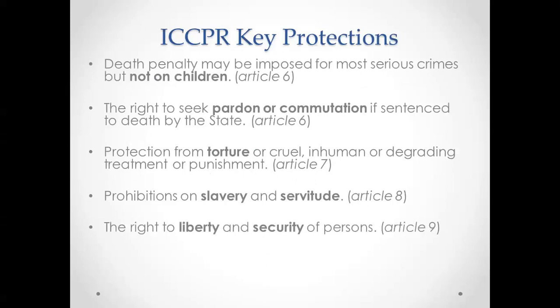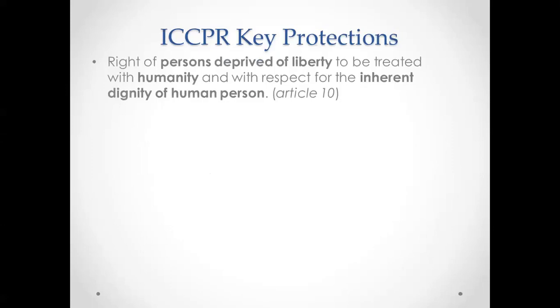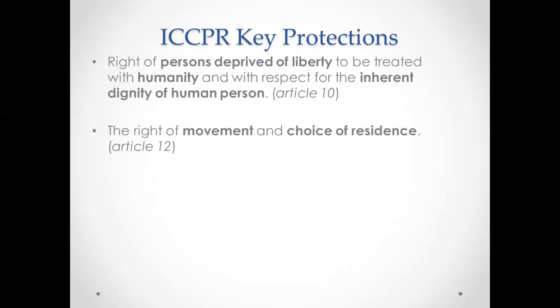Article 9 covers the right to liberty and security of persons, with specific protections regarding due process in arrest and detention, and freedom from arbitrary detention in particular. Article 10, which not too many people really know, is a central article protecting the right to be treated with humanity and with respect for the inherent dignity of the human person — and the US has not entered any reservations for this article. The right to freedom of movement and choice of residence is protected in Article 12.